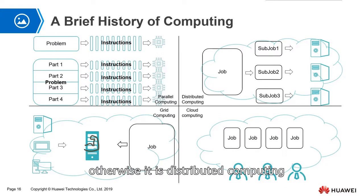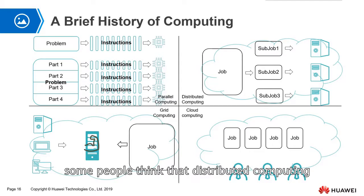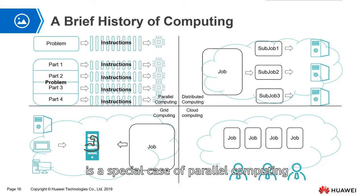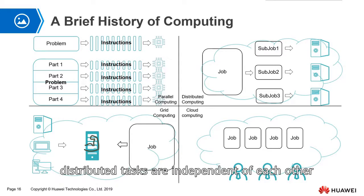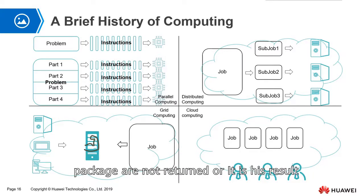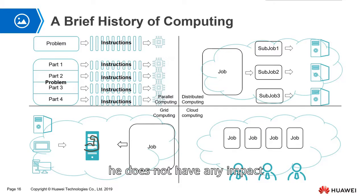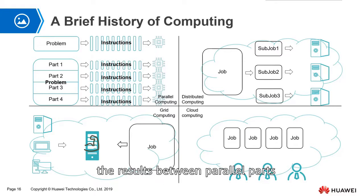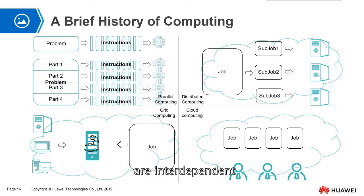Otherwise, it is distributed computing. Of course, some people think that distributed computing is a special case of parallel computing, and this is a correct statement. However, distributed tasks are independent of each other. The result of a previous task package, whether returned or processed incorrectly, does not have any impact on the processing of the next task package. However, the results between parallel calculations are interdependent.